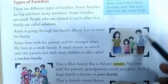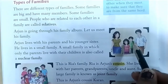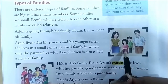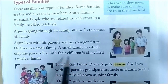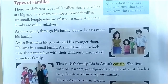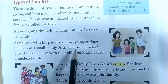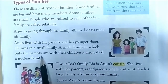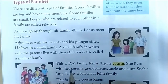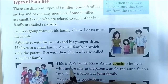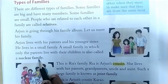In this family, only four people are there. A small family in which only the parents live with their children is also called a nuclear family. Nuclear family is a small family in which only parents live with their children — such families are called nuclear families.